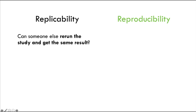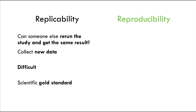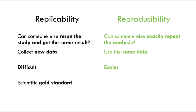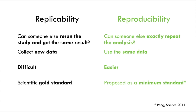For replication you need to collect new data, which is often time-consuming, but replication is the scientific gold standard for validity. In contrast, reproducibility is the extent to which, given the same raw data, you can exactly repeat the data analysis. Someone else takes the same raw data and gets the exact same result. Reproduction does not by itself show that the study is valid, because there could be problems with how the data were collected or errors in the analysis pipeline.